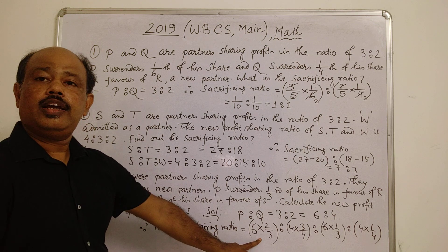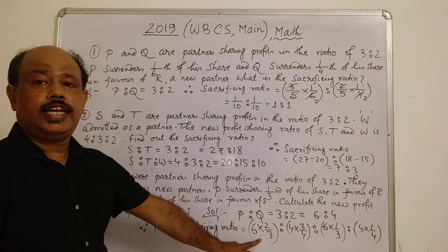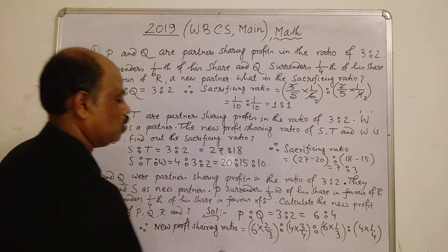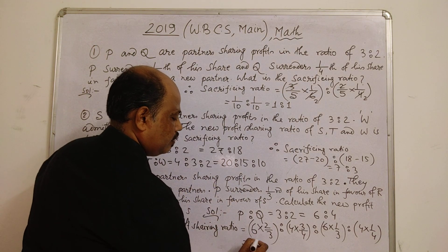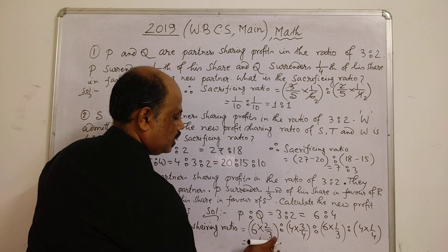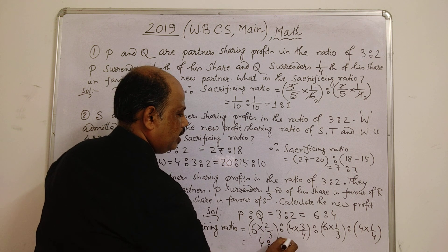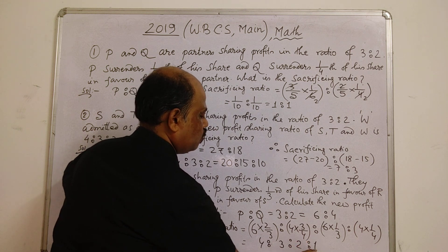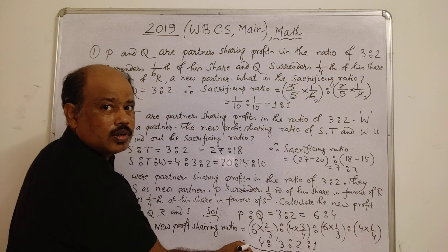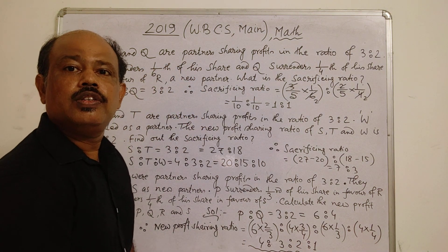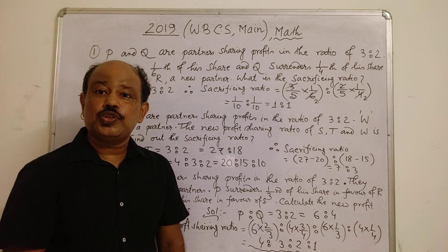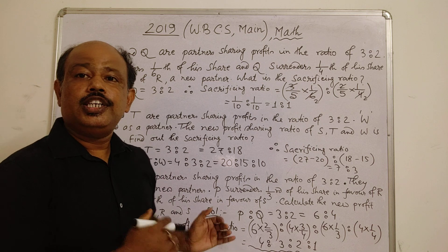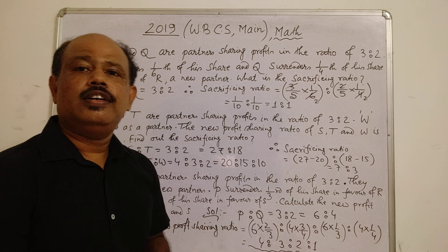The new profit sharing ratio of P, Q, R, and S is equal to 4 is to 3 is to 2 is to 1. That is the new profit sharing ratio.